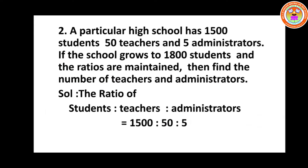Now problem number two. A particular high school has 1500 students, 50 teachers, and 5 administrators. If the school grows to 1800 students and the ratios are maintained, find the number of teachers and administrators. For 1500 students there are 50 teachers and 5 administrators. Now students increase to 1800 and we have to find how many teachers and administrators there are.